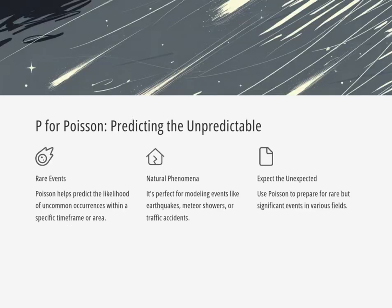Last one — P for Poisson. What's that about? Poisson is your guy for those rare events. Think earthquakes or meteor showers, stuff that doesn't happen all the time. But Poisson helps us predict the probability of a certain number of those rare events happening within a certain time frame or area. Like, what are the chances of two meteor showers happening in the same month? So Poisson is like the ultimate predictor for the unpredictable.